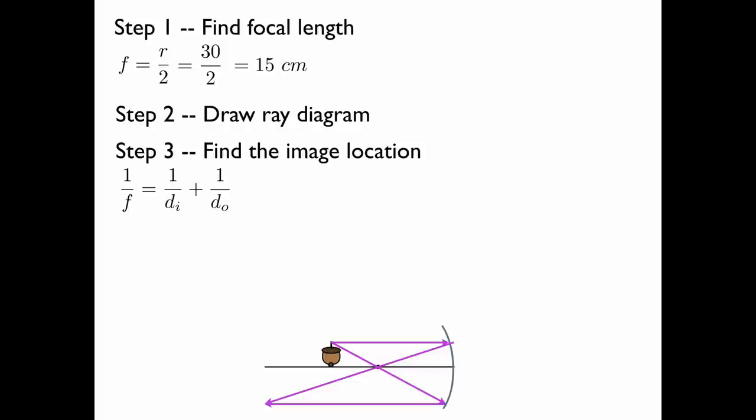This one gives the relationship between the distance of the image, the object and the focal length of the mirror.